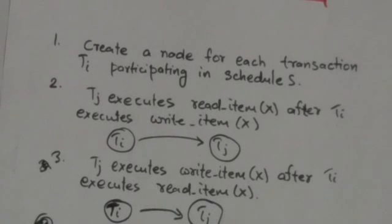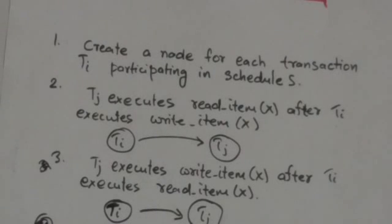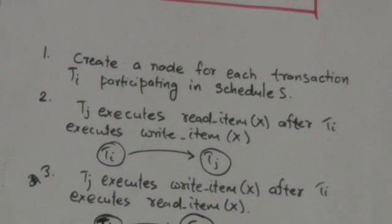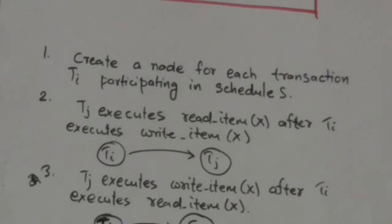Here there is an algorithm to test conflict serializability of a schedule S. This algorithm tests conflict serializability by using a precedence graph. The first step of this algorithm is: for each transaction TI participating in schedule S, we will create a node labeled TI in the precedence graph.